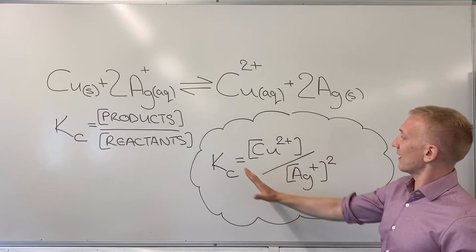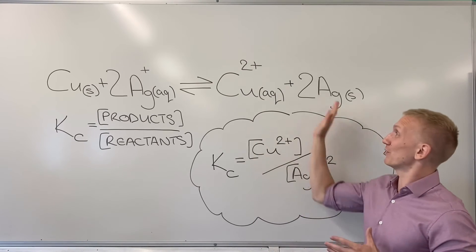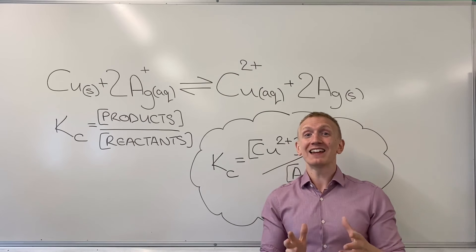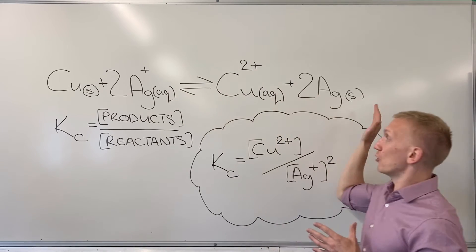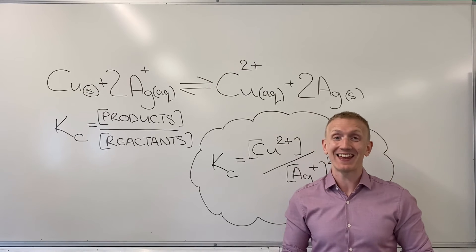When you assemble a heterogeneous KC expression, you may find like this one, you take quite a lot out. I've seen examples where there are four components up here, but only one component actually makes it to the KC expression.